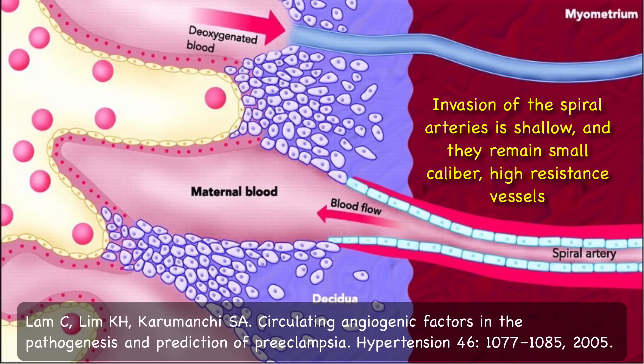The second wave of trophoblastic penetration does not occur. In other words, there is insufficient remodeling of spiral arterioles. Thus, spiral arteries remain constricted and blood flow through the placenta is restricted. This ultimately leads to placental ischemia. This is the beginning of pre-eclampsia.